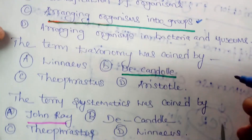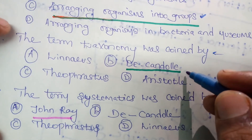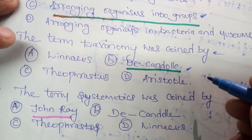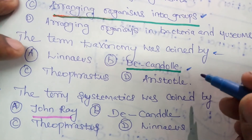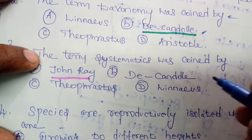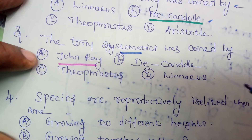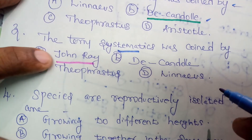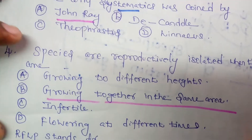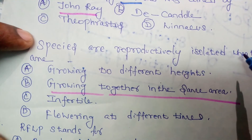The term taxonomy was coined by Augustin De Candolle. The term systematics was coined by John Ray. Species is the basic unit, as he said. Species are reproductively isolated.